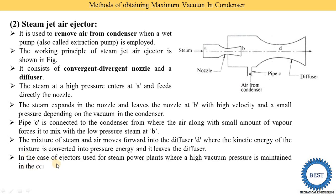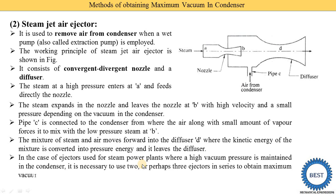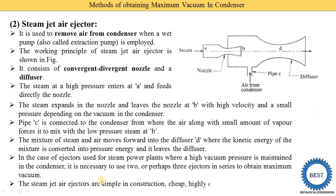In the case of injectors used for steam power plants where high vacuum is maintained in the condenser, it is necessary to use two or three injectors in series to obtain maximum vacuum. If the size of the condenser is larger, more injectors connected in series are needed, each also connected to the condenser for removing the air. The steam jet air injectors are simple in construction, cheap, highly efficient, and have no moving parts.